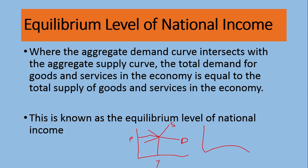Aggregate demand and aggregate supply determine our total equilibrium level of output. This is known as the equilibrium level of national income, where aggregate demand and aggregate supply are equivalent. For example, the total demand for chicken in the country is 100 million tons per year, and the economy is also producing 100 million tons at a price of two pounds per kg.